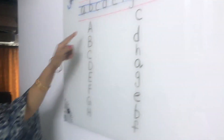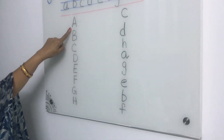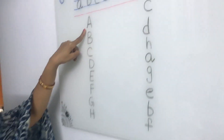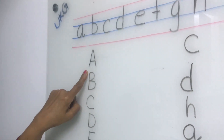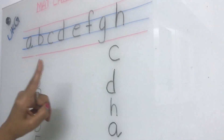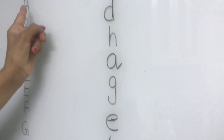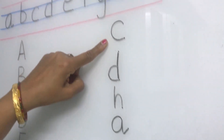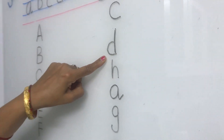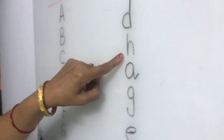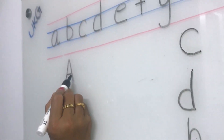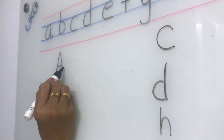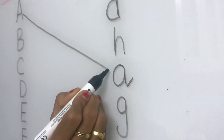Now I will show you how to do the activity. See, this is capital A. This capital A we have to match with the same small letter here. Where is the small A? This is small A. Now we have to match capital A to small A like this.